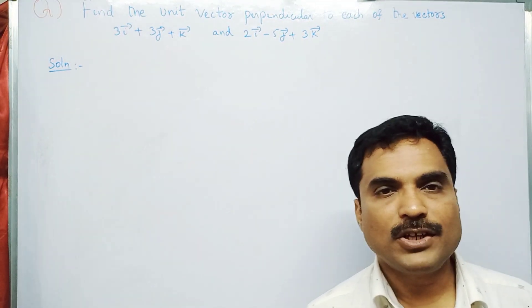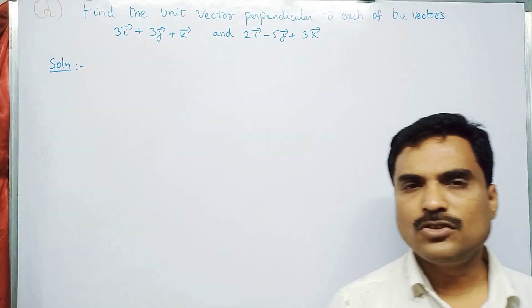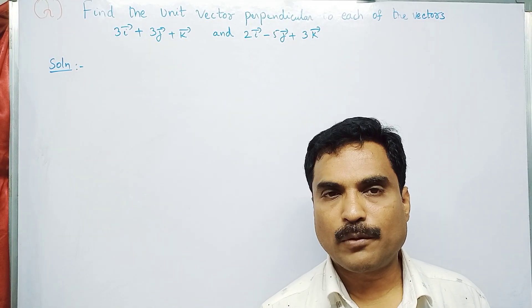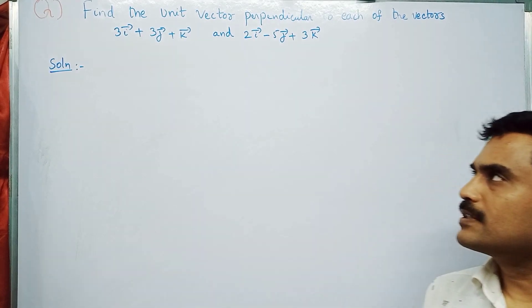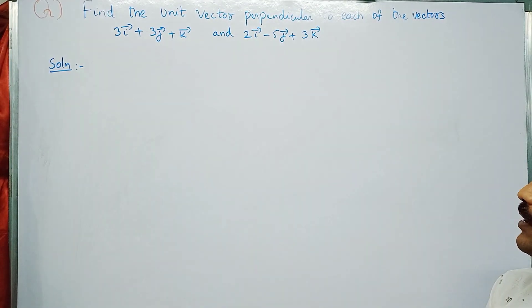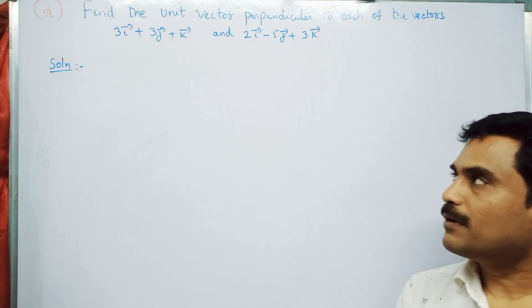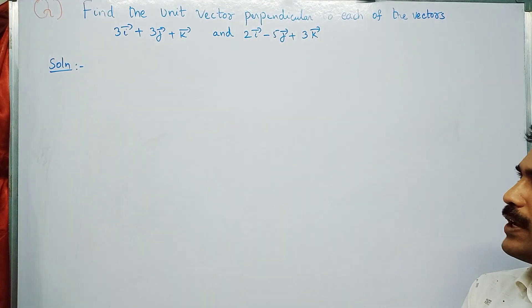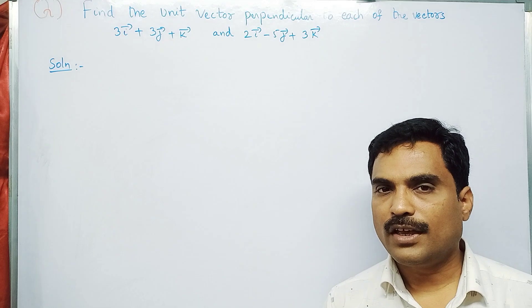Hi, welcome to my channel. I am Takshisila. In this new video I am going to solve a mathematical problem under vector product. The problem is: find the unit vector perpendicular to each of the vectors 3i + 3j + k and 2i - 5j + 3k.